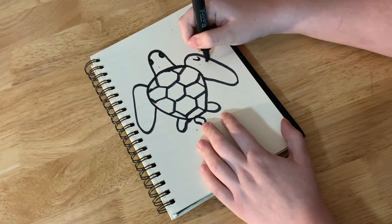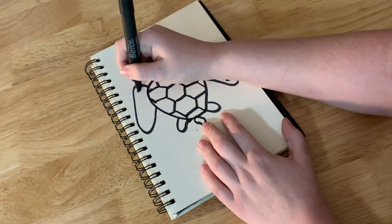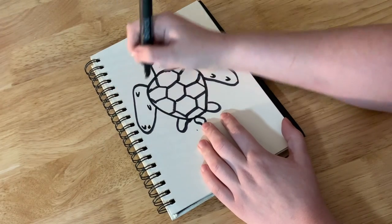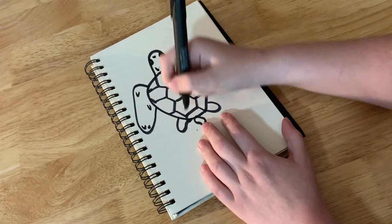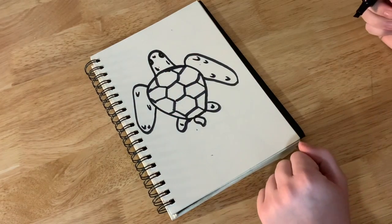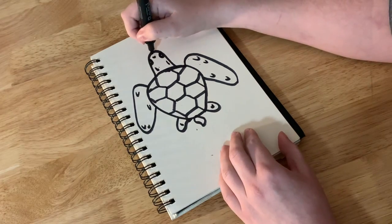Then if you wanted you could add some scales to the rest of his little body, just give it a little bit of texture. And there we go, there we have our sea turtle.